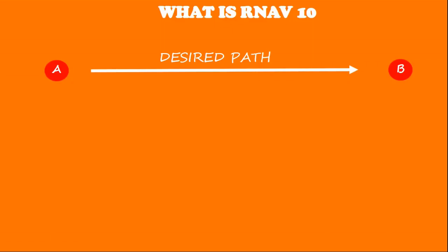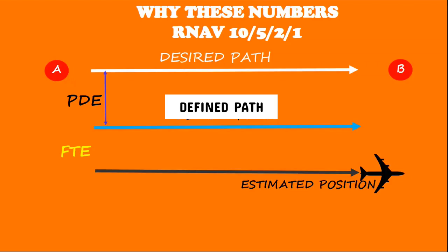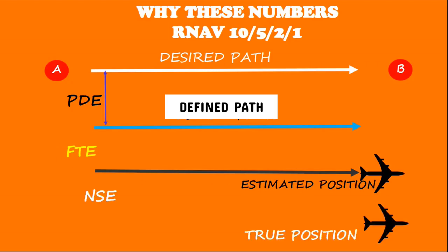Suppose we have a route from A to B — this is called the desired path, which is the published path. When we create and publish the actual route on a chart, there will always be a small error between the desired path and the defined path due to technical inaccuracies; this is called the path definition error. The next inaccuracy is due to the fact that the aircraft must be controlled by a human or the autopilot, presenting something called the flight technical error — the difference between the estimated position and the defined path. The next error is the navigation system error — the difference between where the aircraft thinks it is, the estimated position, and where it actually is, the true position. The numbers behind RNAV refer to the allowed difference between our desired path and our true position, called the total system error or lateral navigation accuracy.